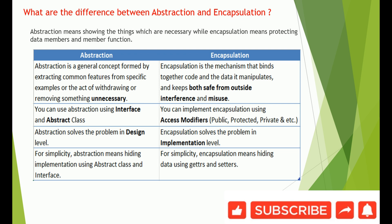When it comes to abstraction, it is a general concept formed by extracting common features from specific examples, or the act of removing something unnecessary. For example, if you have an application connecting to different databases, getting data, and performing operations like creating, modifying, or deleting records — as an end user you don't need to understand what's really happening inside the application. You just need to operate it without worrying about what is happening at the back end.